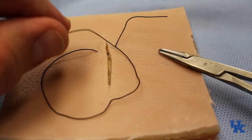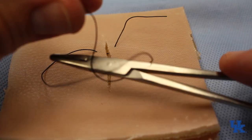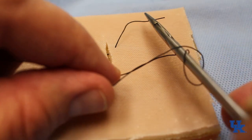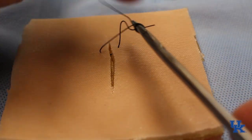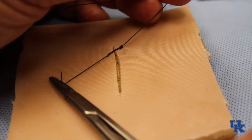So now you're going to make a loop. Put your instrument in the loop, turn once, turn twice, open your instrument, grab, and then cross your hand and throw it down.